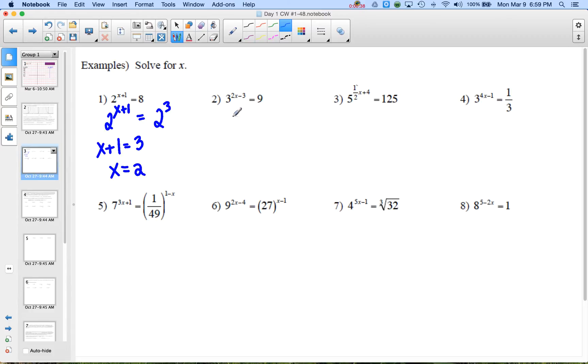So then what you're going to do is when you look at this, you're going to try and determine what would my common base be. So for the next problem, the common base would be 3, so I don't do anything to this side, but I'm going to rewrite the 9 as 3 squared, and now that I have a common base, I can say 2x minus 3 equals 2, so 2x equals 5, and x equals 5 halves.